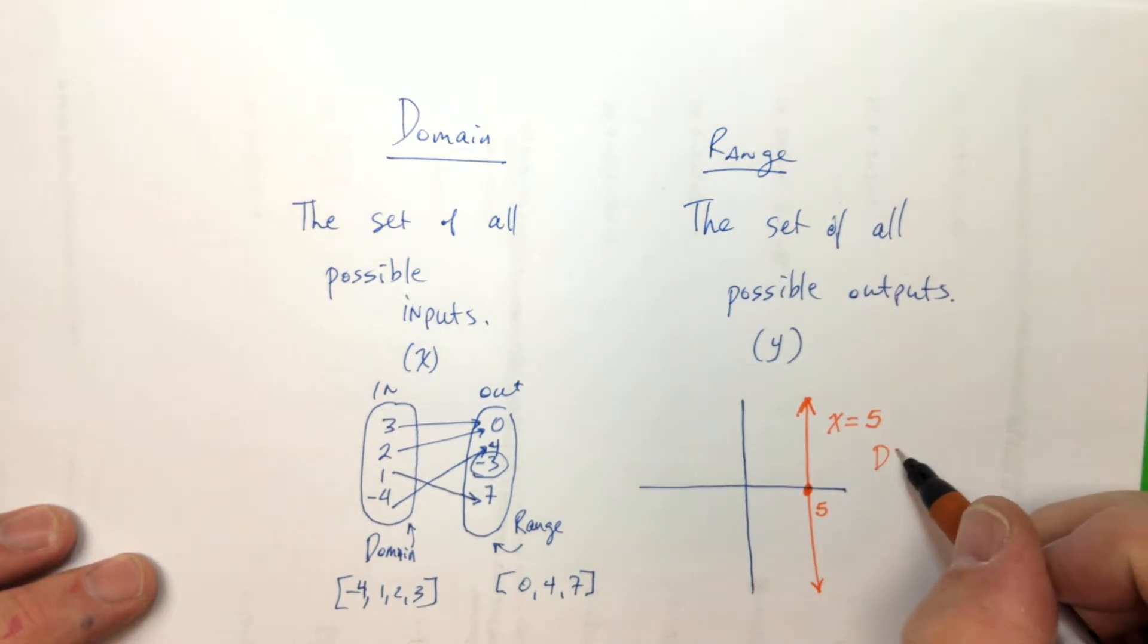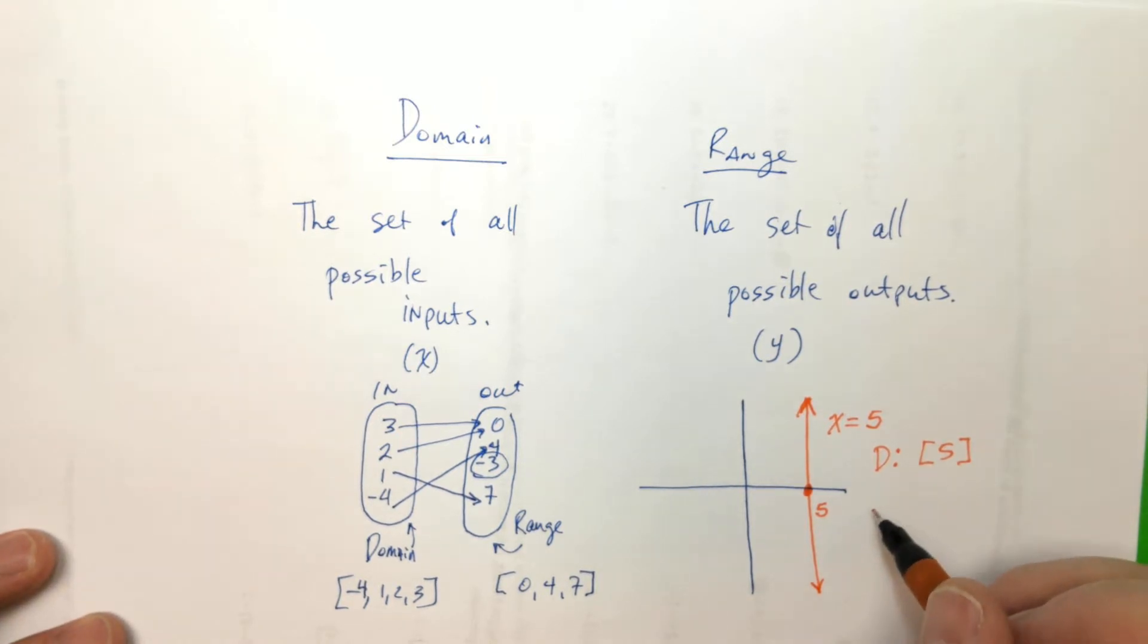Because this one input of 5 has infinitely many outputs, right? But we can still talk about this domain and range. The domain of this is just all of the inputs. It's just 5. Do you see what I mean? That's the only number you can plug into that. Whereas the range, the output, is from negative infinity to positive infinity.